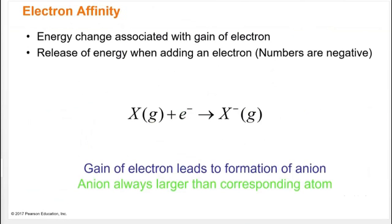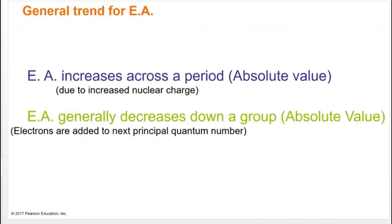Electron affinity is the energy associated with gaining an electron — it's always a negative number (energy released), and a greater electron affinity means a larger release. Electron affinity increases across a period because greater effective nuclear charge makes the atom more attractive to electrons, like fluorine. It decreases down a group because electrons are added to higher principal energy levels farther from the nucleus, releasing less energy.